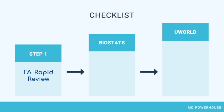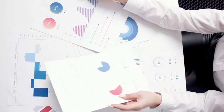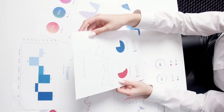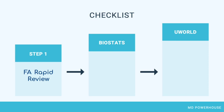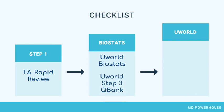Biostatistics is a huge part of the USMLE Step 3. To review it efficiently, there are many YouTube videos on this topic that you can find with a quick search. There are also UWorld biostat questions that cost about $25 and provide a breakdown of the basics of biostatistics. The UWorld Step 3 question bank also includes all those drug ads and abstracts that will appear on exam day.